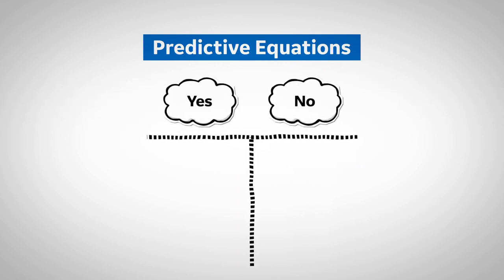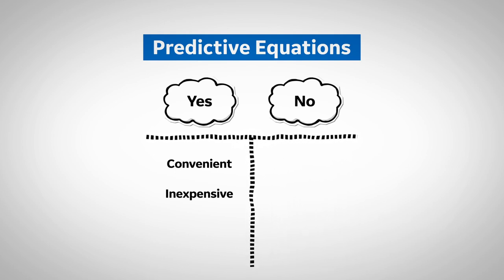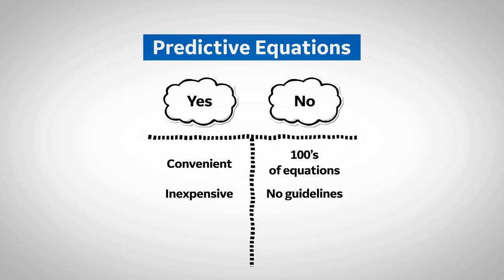Predictive equations are often used because they are convenient and inexpensive. Unfortunately, they have many drawbacks. There are hundreds of equations. There is lack of consensus about which equations are best to use, which leads to significant practice variation. And they are only accurate less than 40% of the time. Less than 40%, let's get another tool, shall we?